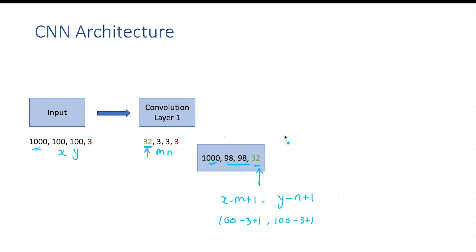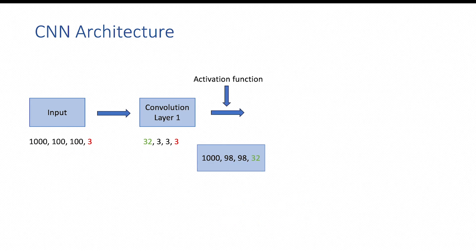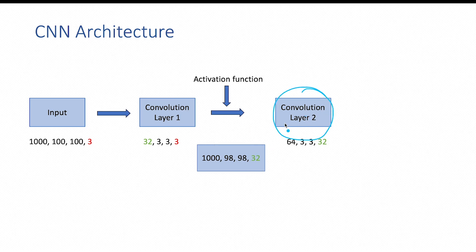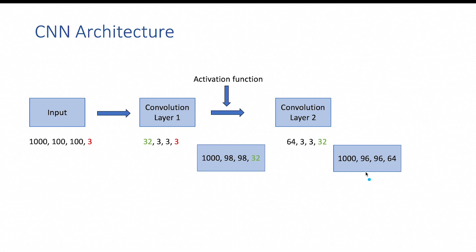So far we have not added any non-linearity to the model. We can add non-linearity by considering an activation function — passing this data through an activation function. The resultant feature map can then be input to a subsequent convolution layer. You can have a series of convolutional layers within the CNN architecture. This time there are 64 kernels, so convolutional layer 2 generates 64 different feature maps as output.